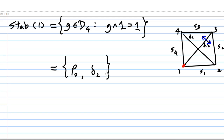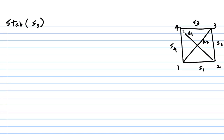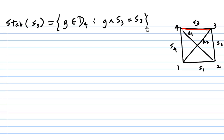The stabilizer of 1 consists of rho0, the identity element, and delta2, the reflection along diagonal D2. Now let's look at the stabilizer of S3. S3 is one side of the square. We want the set of elements inside D4 such that g acting on S3 gives back S3. One possible element is rotation of 0 degrees, rho0.